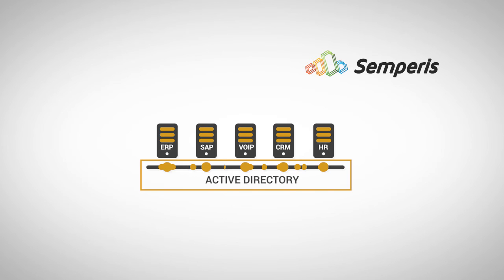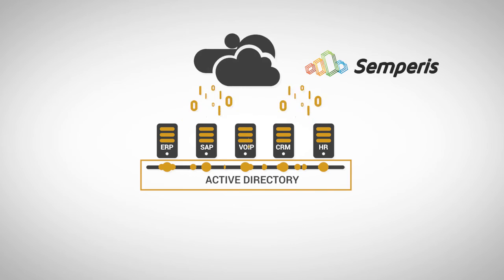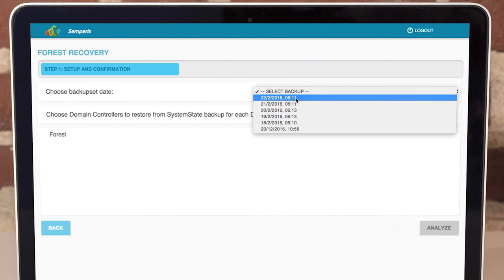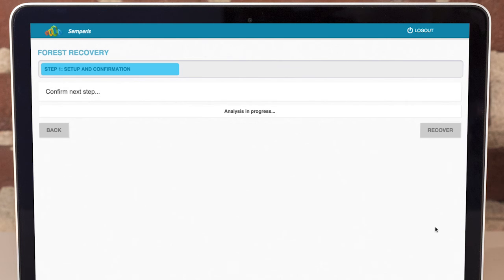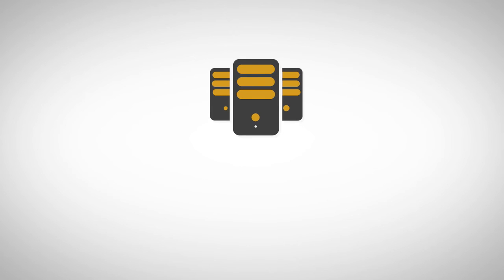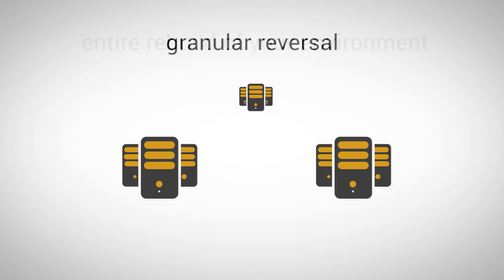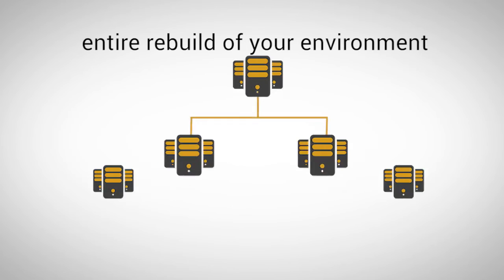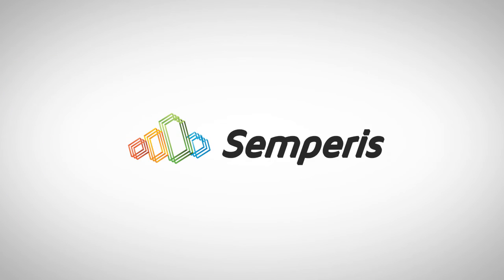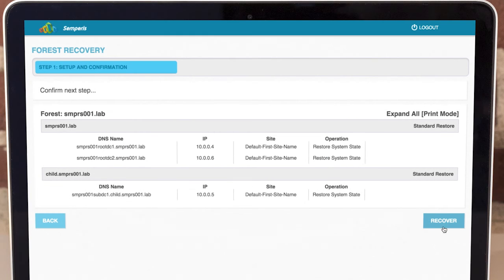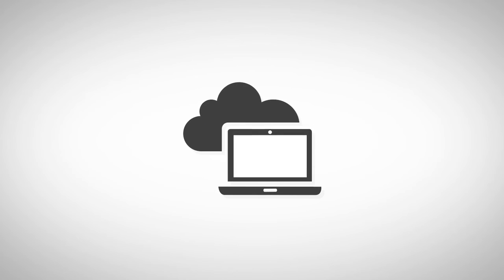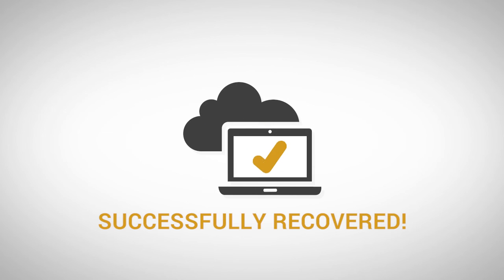We constantly gather the critical information about your Active Directory structure, and then allow you to return to a state where it was functioning properly. So, whether it's a granular reversal or an entire rebuild of your environment, with Semperis, all it takes is one click at a fraction of the time other alternatives require.